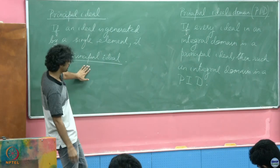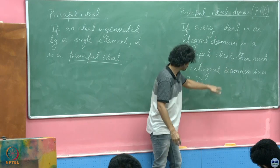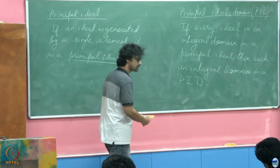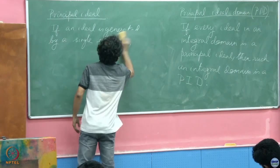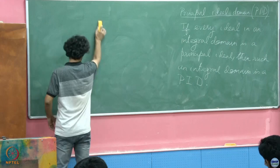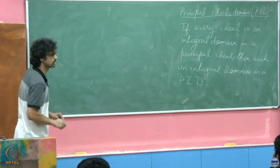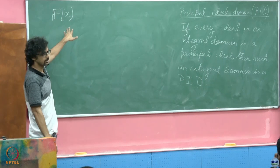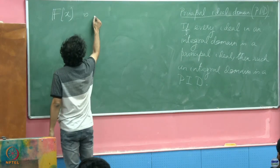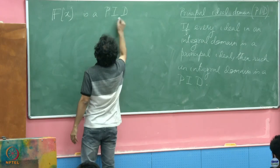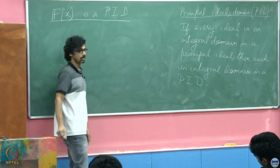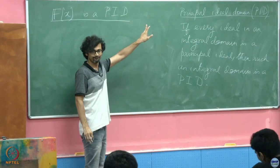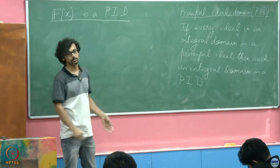Now the first non-trivial claim we are going to make — and we will prove it in the next module but state the result now — is this: you agree that F[x], apart from being a commutative ring with identity, is also an integral domain. The claim is that F[x] is a PID — a Principal Ideal Domain. That is the claim we shall be proving in the next module.